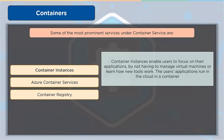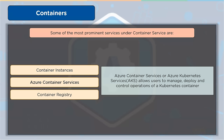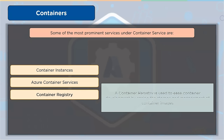Container Instances are the quickest and easiest method to operate a container in Azure without needing to manage virtual machines or use extra services. Azure Container Services (Azure Kubernetes Service) allows users to manage, deploy, and control Kubernetes container orchestration — automating and managing large numbers of containers for distributed architectures and high volumes. Container Registry eases storage and management of container images to streamline container development.